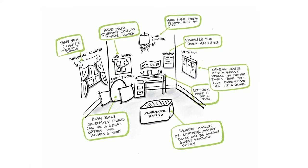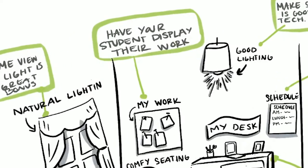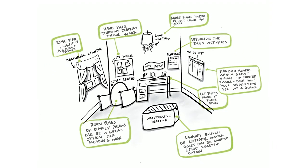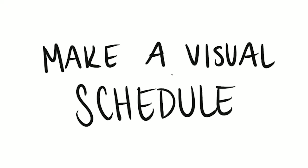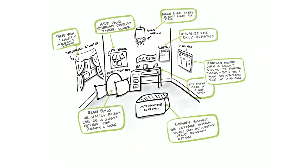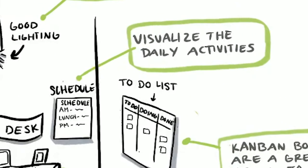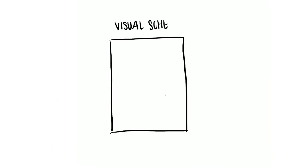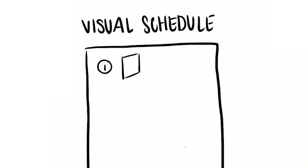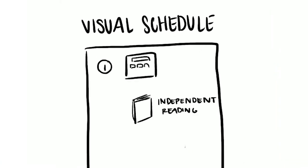Make sure your student is feeling proud about their work — have an area where they can display what they've accomplished. We all benefit from visual cues, but our youngest students who are still learning to read really benefit. Something we encourage you to think about is developing a visual schedule, where you have an image and the corresponding text to let your student know what happens throughout the day.